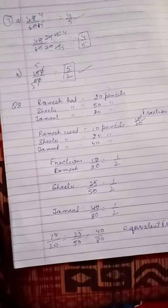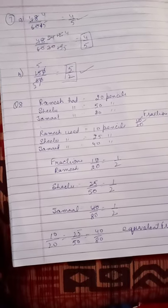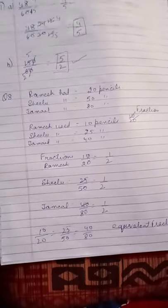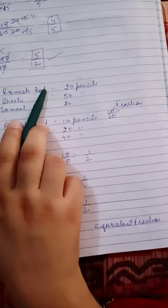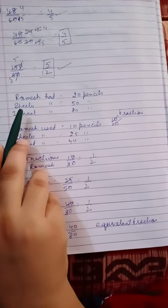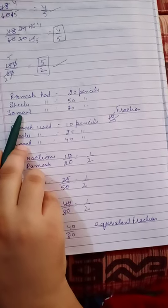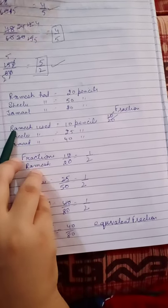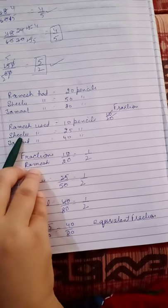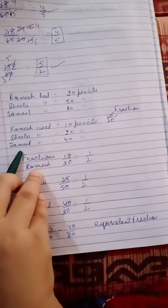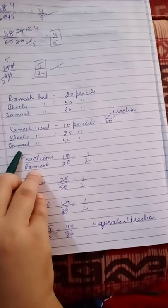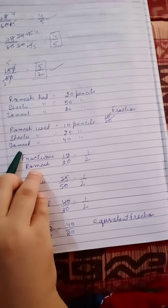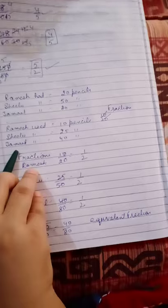Good morning students. Yesterday we did exercise 7.3 up to question number 7. Today we are going to do question number 8. Ramesh had 20 pencils, Shilu has 50 pencils, Jamal has 80 pencils. After 4 months, Ramesh used 10 pencils, Shilu used 25 pencils, Jamal used 40 pencils. What fraction did each use up? Check if each has used up an equal fraction of their pencils.